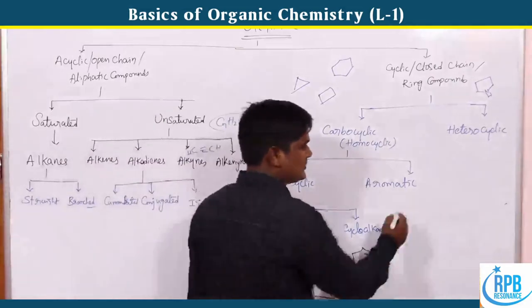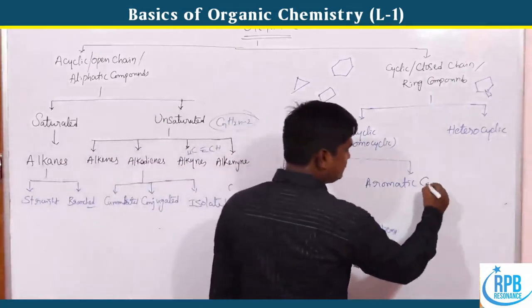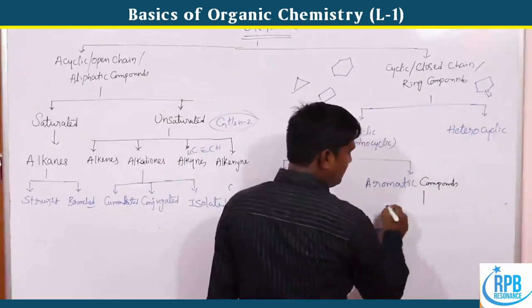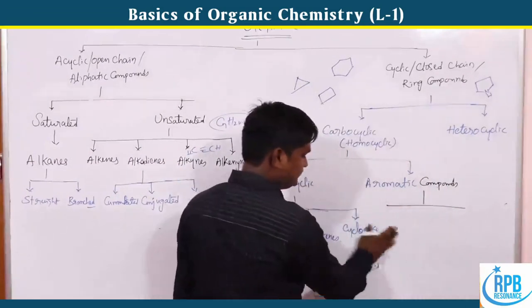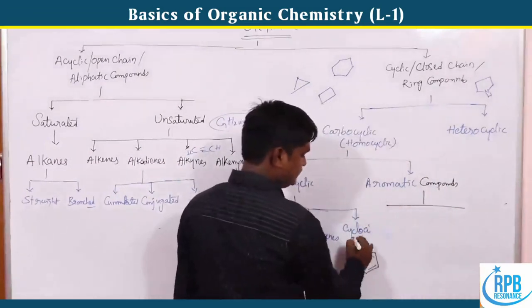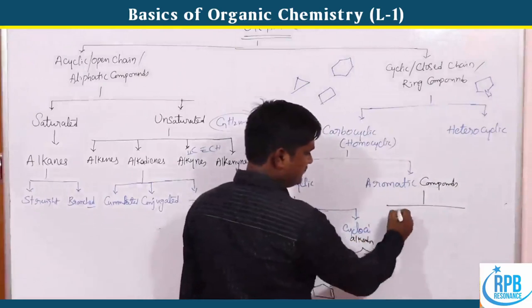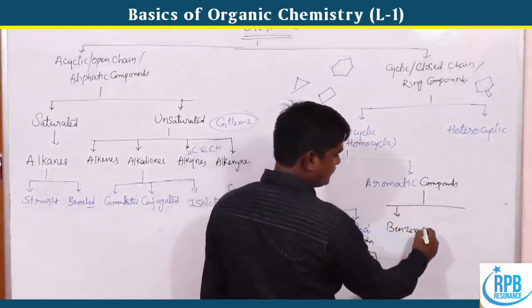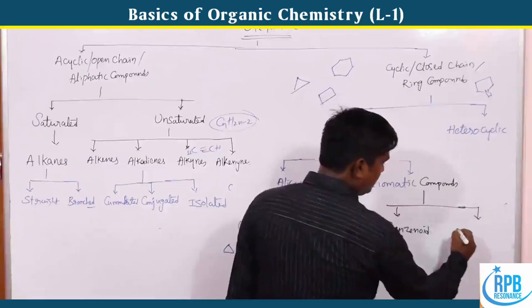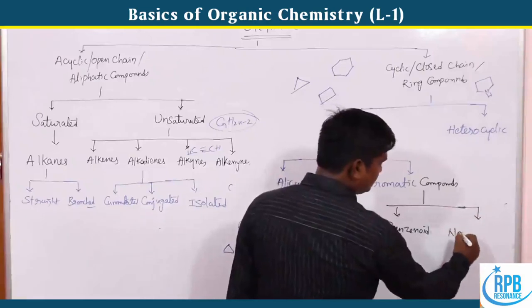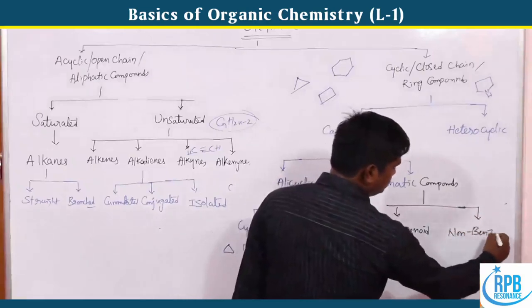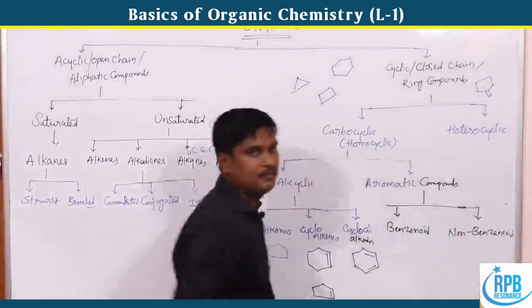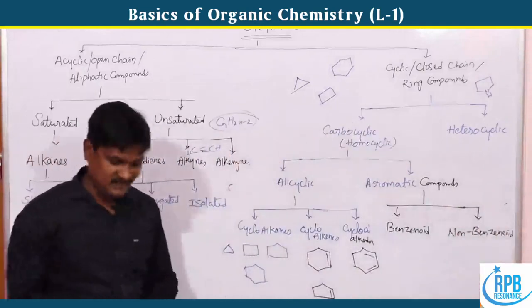Now, aromatic compounds. Aromatic compounds are divided into two types: benzenoid rings and non-benzenoid rings.